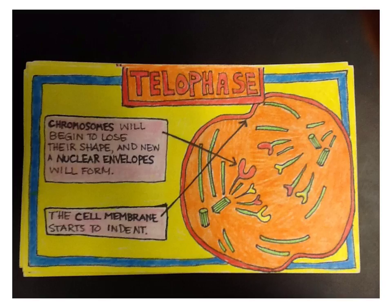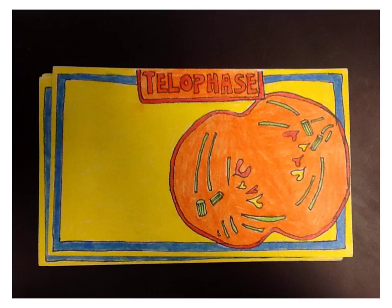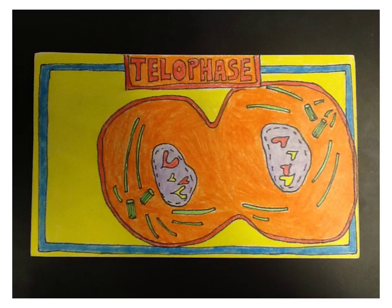Here's our first depiction of telophase, with nice descriptions of what's happening with the chromosomes, the nuclear envelope, and the cell membrane. You can see right here we're starting to have a cleavage event occurring. So what ends up happening now is you're animating telophase over three cards. Here is the first one, the second one, and here's the third.